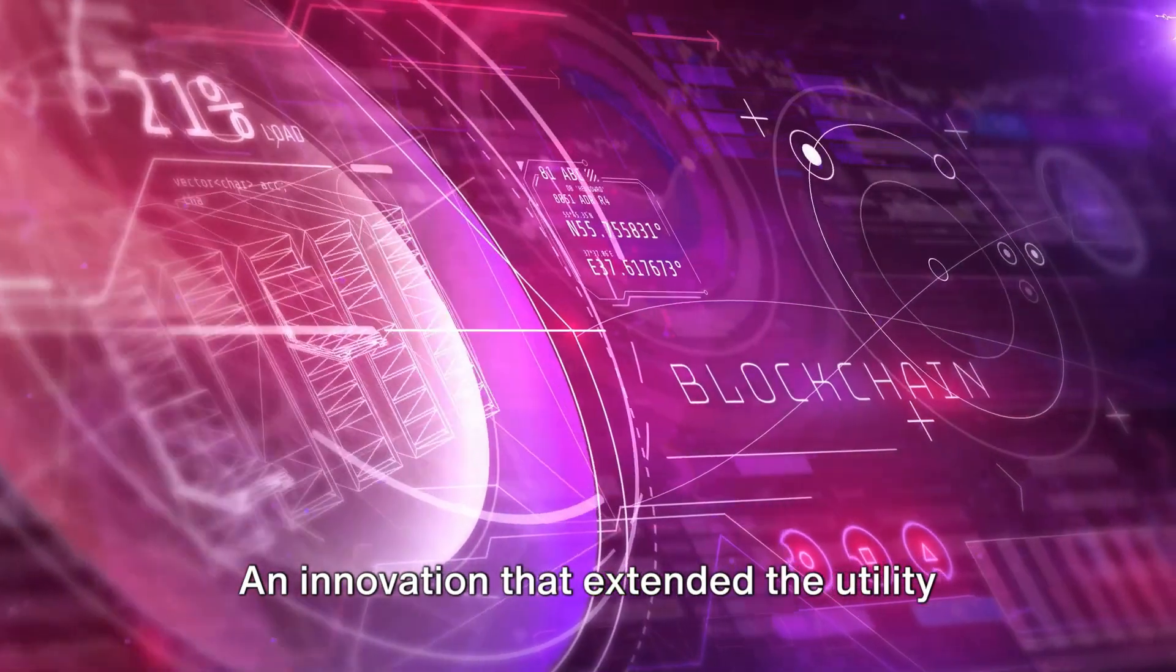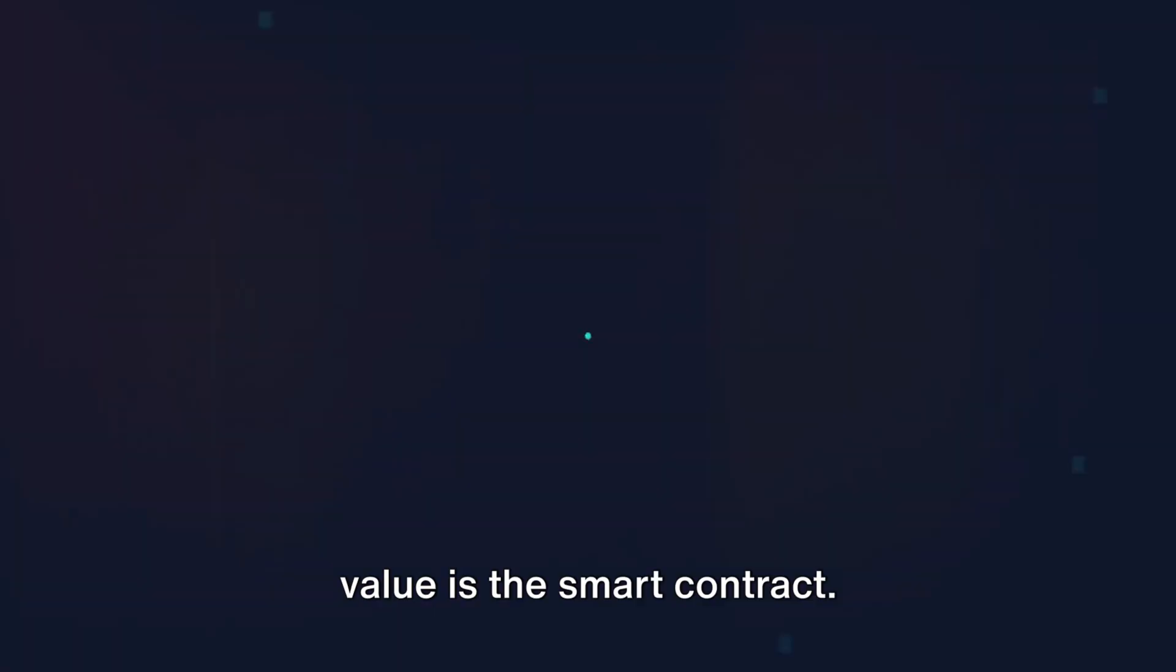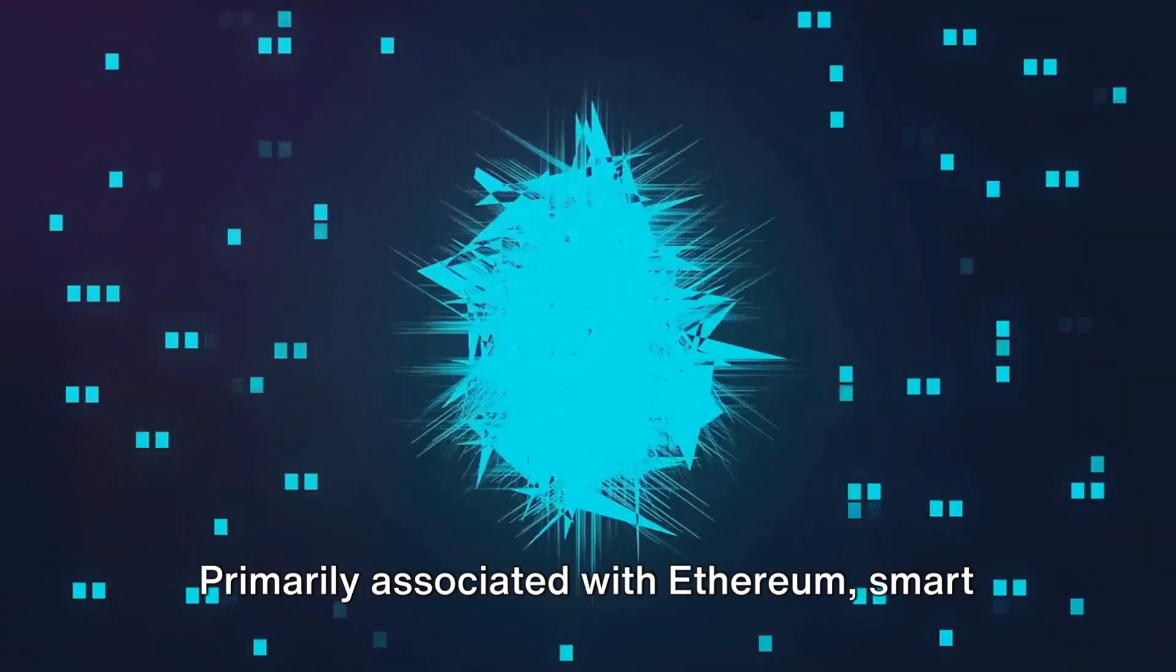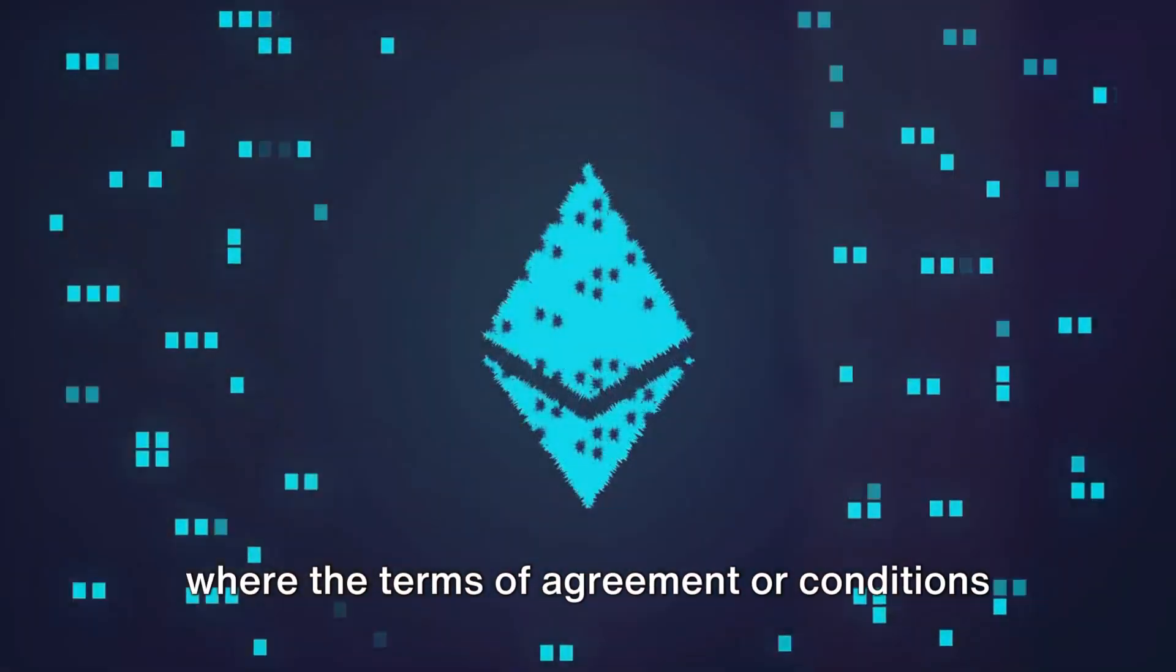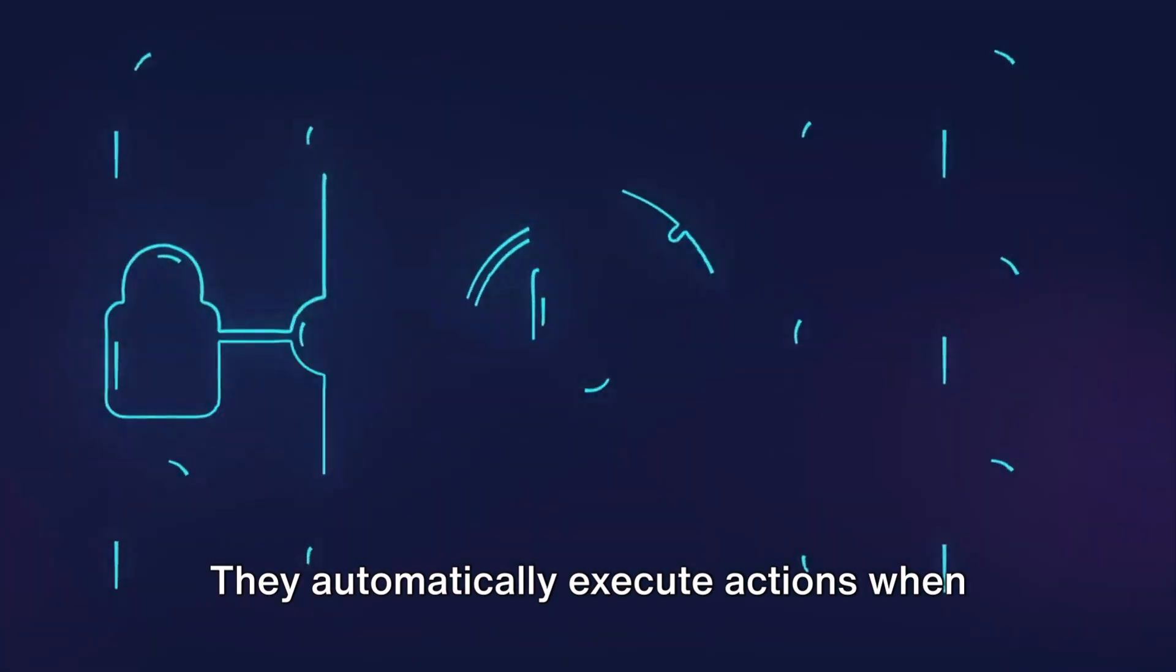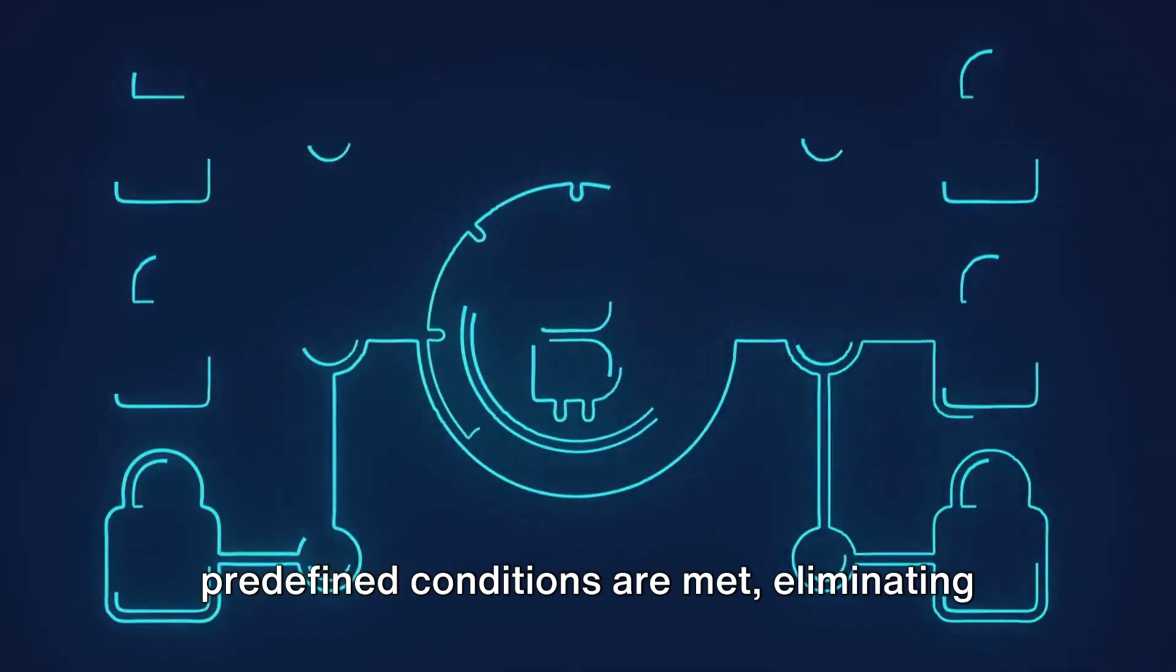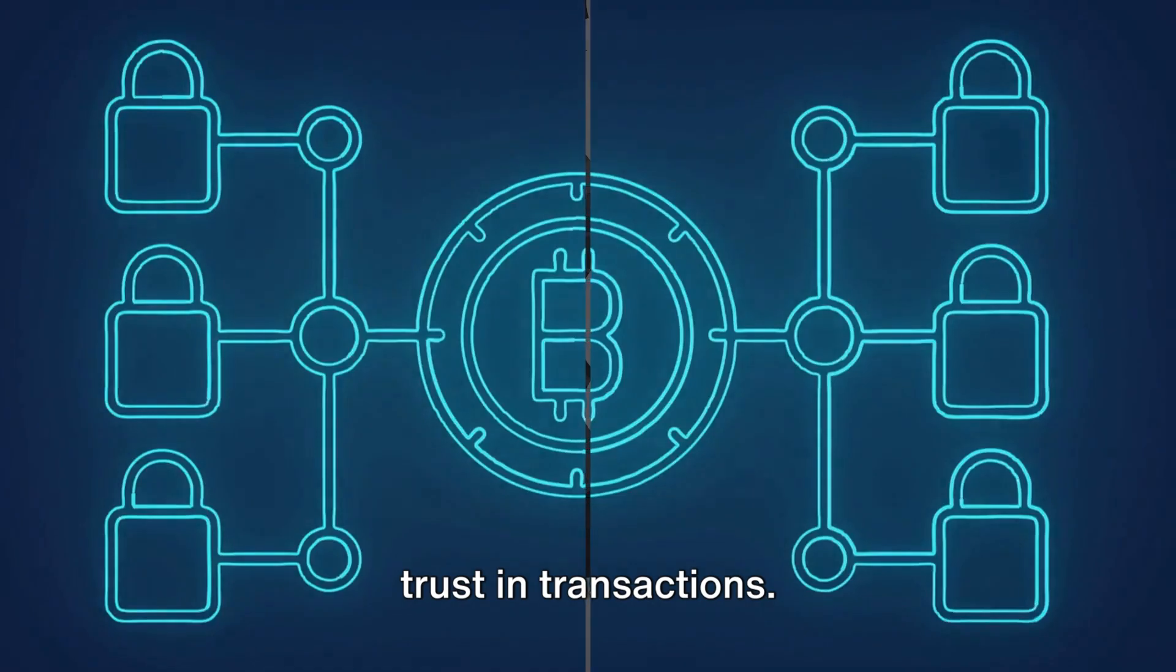An innovation that extended the utility of blockchain beyond just transferring value is the smart contract. Primarily associated with Ethereum, smart contracts are self-executing contracts where the terms of agreement or conditions are written into lines of code. They automatically execute actions when predefined conditions are met, eliminating the need for intermediaries and ensuring trust in transactions.